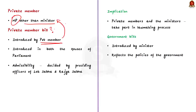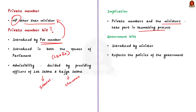An important thing to note is that a private member's bill can be introduced in both Lok Sabha and Rajya Sabha. The admissibility of the private bill is decided by the Chairman in the case of Rajya Sabha, and by the Speaker in the case of Lok Sabha. This implies that both private members and ministers can take part in the lawmaking process in India.